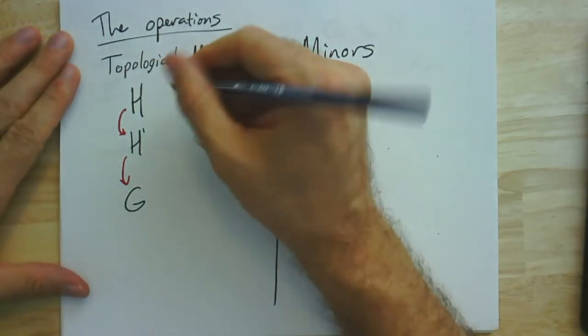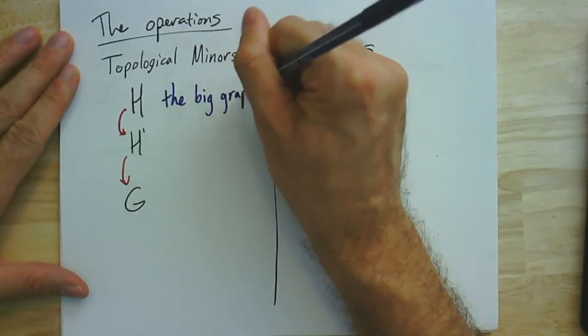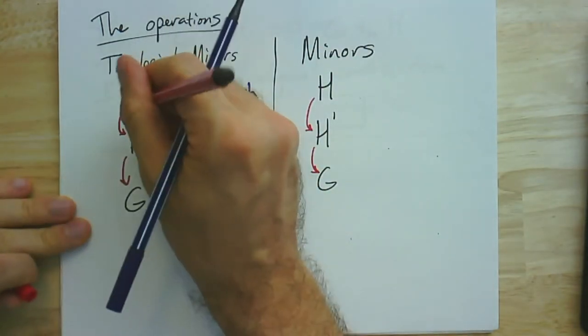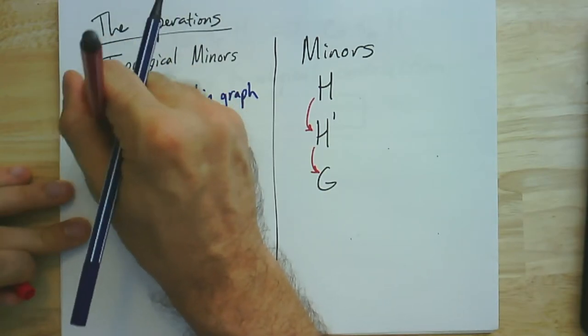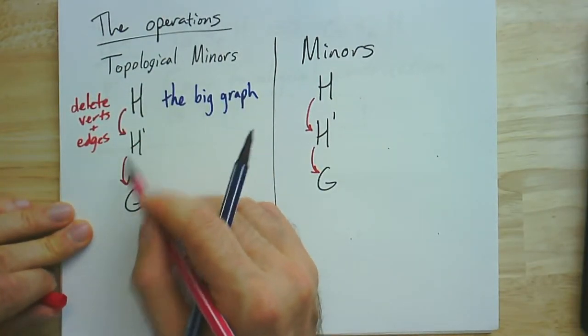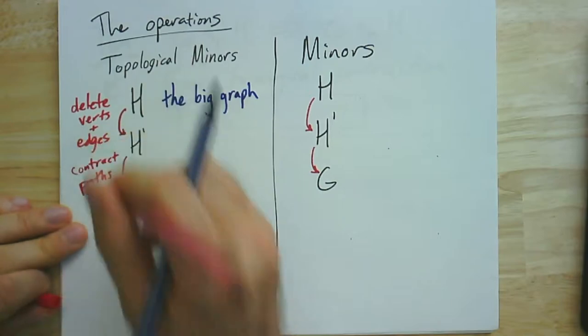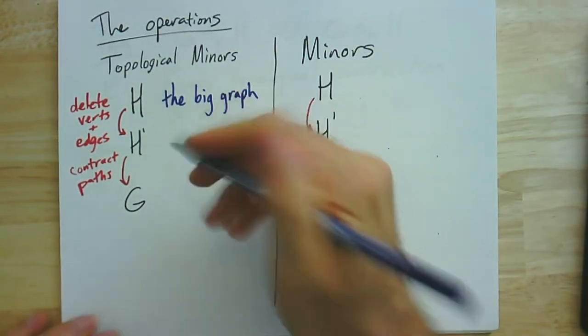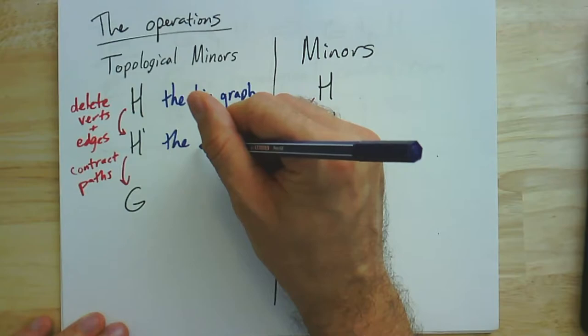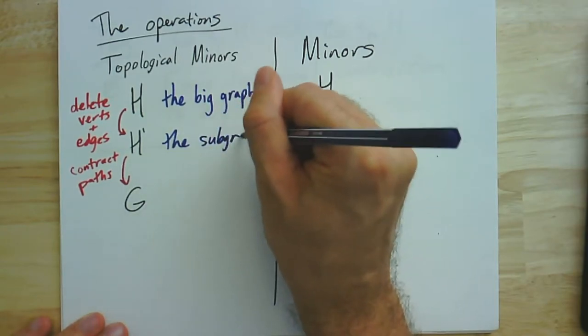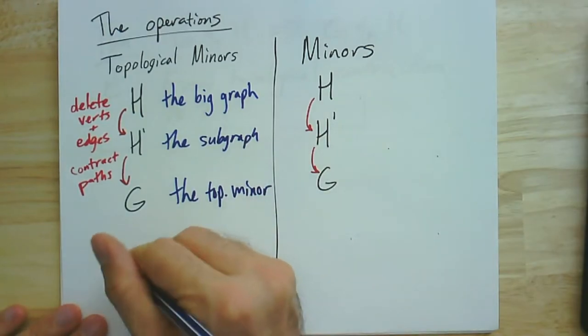That is, ways of manipulating the graph. And often they're thought of in terms of starting with some big graph. So that's the larger graph, H. And then I find a subgraph. So you can think about the process of finding a subgraph as delete vertices and edges. That's taking a subgraph. And then from that subgraph down to G, I do this process of contracting paths. And for topological minors, that's always taking degree 2 vertices and replacing them with a single edge.